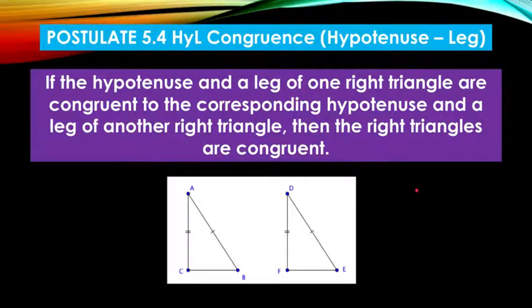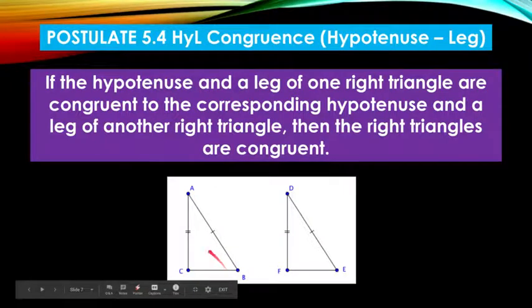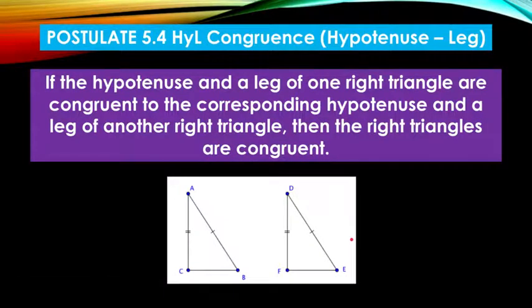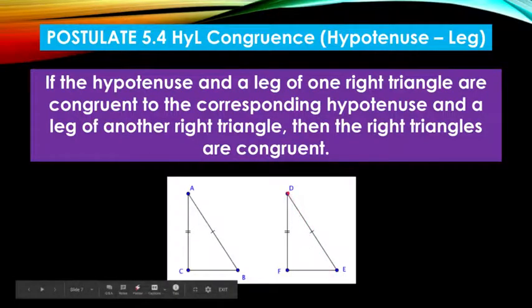For HL congruence, if the hypotenuse and another leg of a right triangle is congruent to the corresponding hypotenuse and another leg of the right triangle, then these two right triangles are congruent. That's why it's called HL - hypotenuse, leg, hypotenuse, leg.